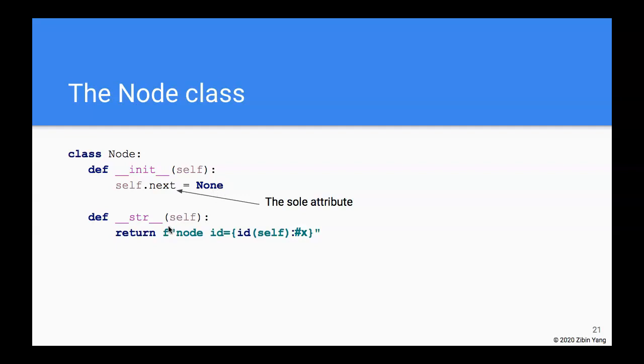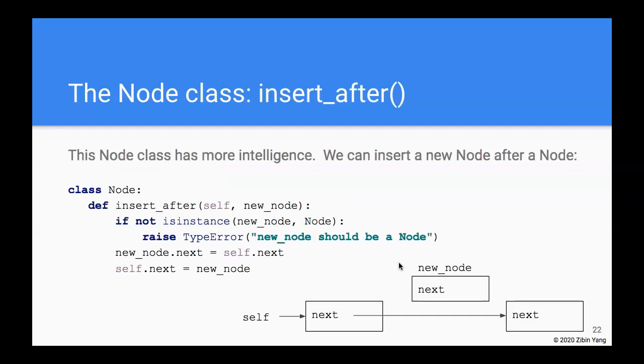And in the __str__ method we simply print out the node's ID in hex format. Now this Node class is a little more intelligent than the one that we implemented previously—that it actually has the ability to insert a new node after the node itself. So we define an insert_after method that takes a new node as its parameter.